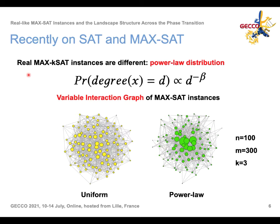UNSAT instances are not very common in practice. Industrial instances have a different distribution of variables and clauses — in particular the degree of variables in the variable-to-clause graph follows a power-law distribution. In this power-law distribution, the probability of having degree d for a variable is proportional to d to the power of minus beta, and beta is a parameter.